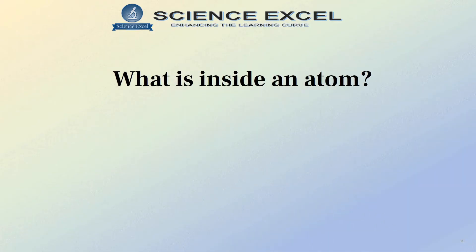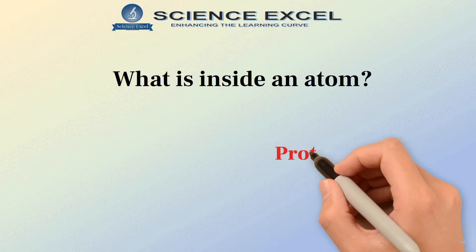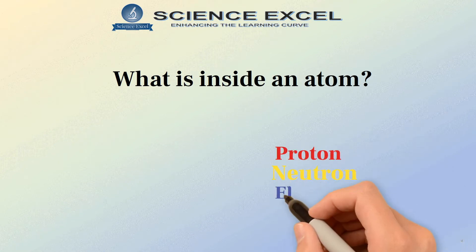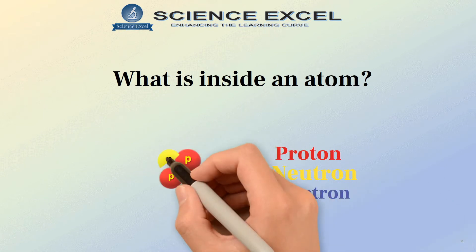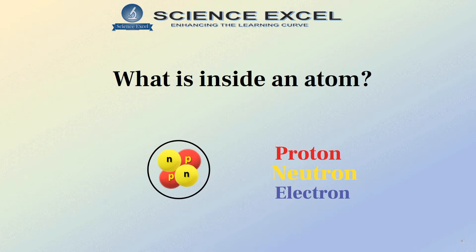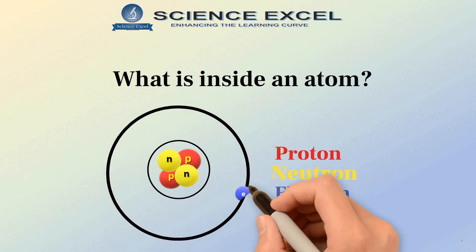Atoms are made up of even smaller subatomic particles called protons, neutrons and electrons. Protons and neutrons are located inside the nucleus and the electrons are located in the cloud that surrounds the nucleus.